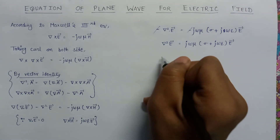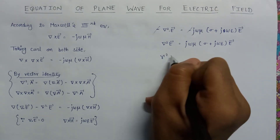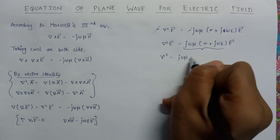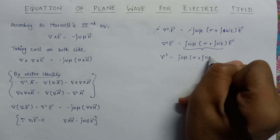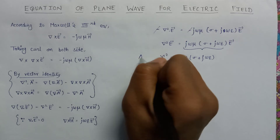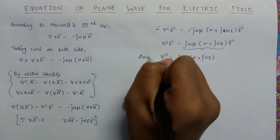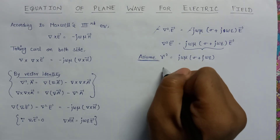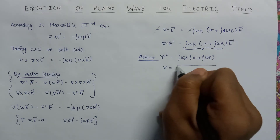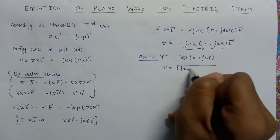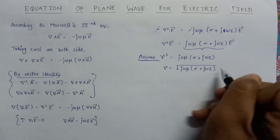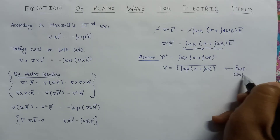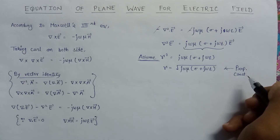Let us assume that the propagation constant gamma squared is equal to this whole term: j omega mu times (sigma plus j omega epsilon). So the value of gamma becomes the square root of j omega mu times (sigma plus j omega epsilon). This is the propagation constant for a uniform plane wave for the electric field.